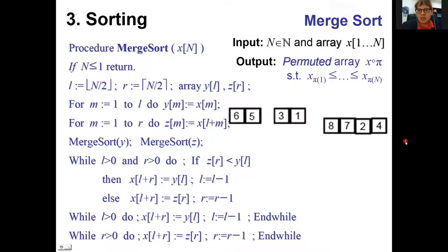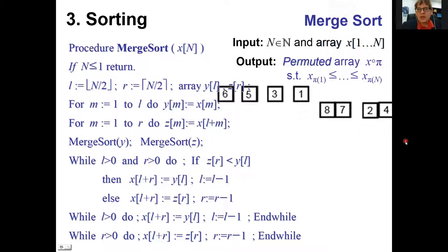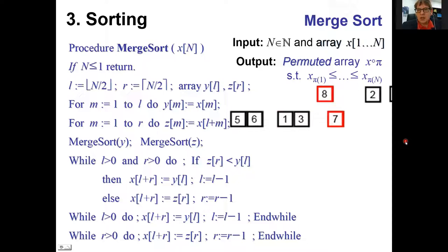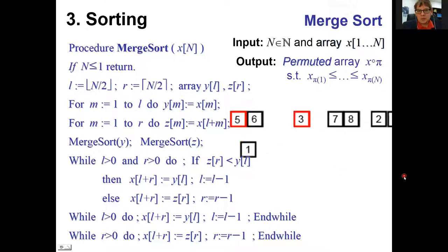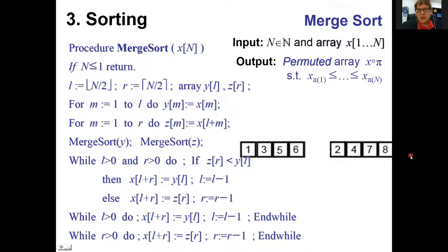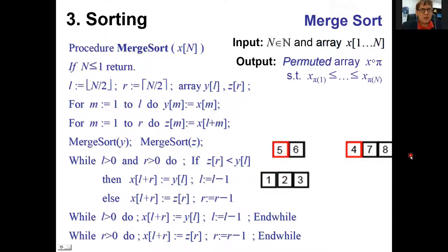Starting from scratch with the full example: we split the original array into two parts, recursively split each into two more, sort each one-element part trivially, then merge the two-element parts separately, then merge the pairs, and finally merge the two halves to produce the fully sorted array.